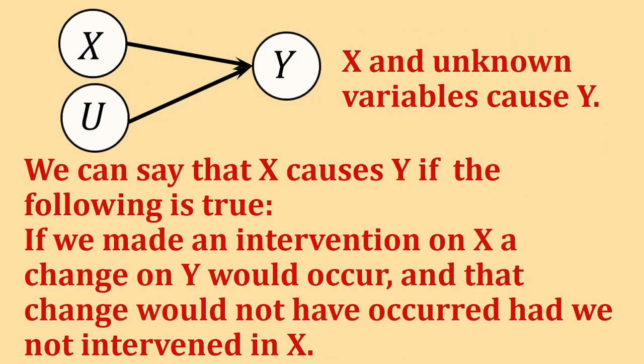In the simplest causal model, variables x and u cause a change in variable y. When can we say that x causes y? We can only say that when two conditions are true. First, if we made an intervention on x, a change on y would occur. For example, if x is taking an aspirin and y is whether my headache goes away — I take the aspirin and the headache goes away. That's the first condition: I intervened on x and an effect on y was observed.